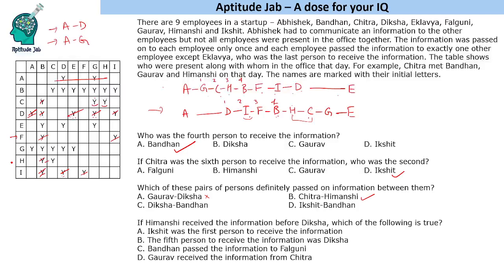The last question: if Himanshi received the information before Diksha, which of the following is true? Himanshi received before Diksha, so we consider that specific case. Ikshet was the 1st person to receive — that is false. The 5th person was Diksha — that is also incorrect. Bandhan passed the information to Faguni — that is the right answer. And Gaurav received from Chitra is incorrect. So that is the solution to the set and the answers to the questions.